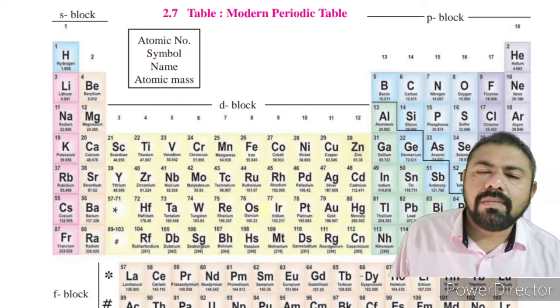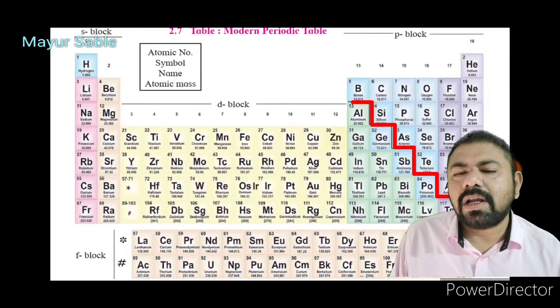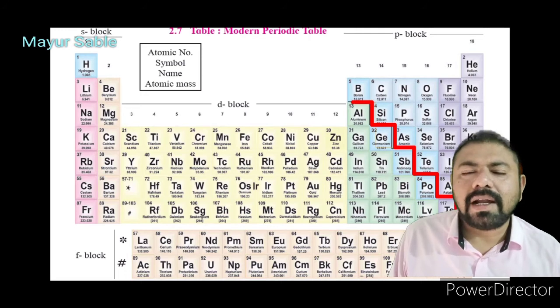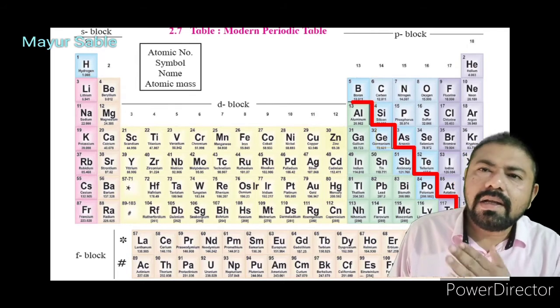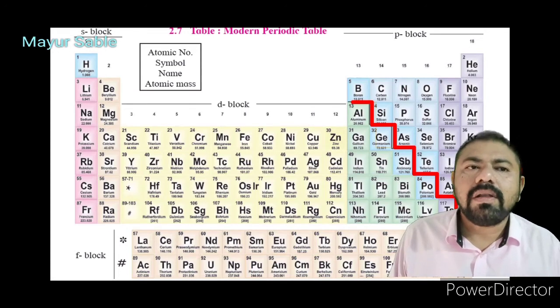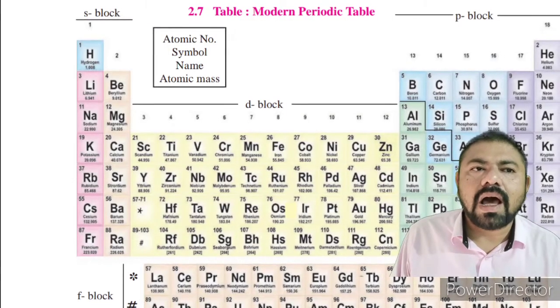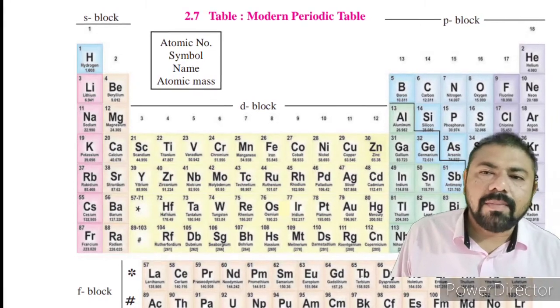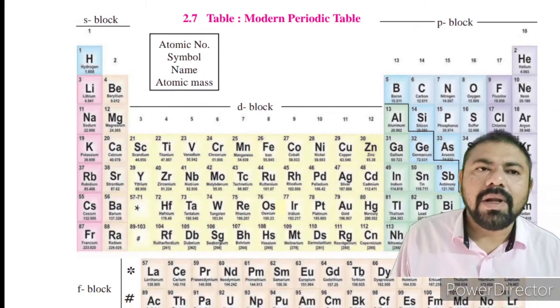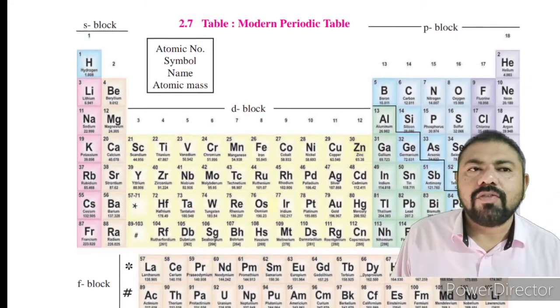The d block elements are also called transition elements. There is a zigzag line present in the p block of the periodic table which separates metals and non-metals. Elements that show properties of both metals and non-metals are called metalloids, and they are located near the zigzag line. Metals are on the extreme left side of the modern periodic table, and non-metals are on the right side.